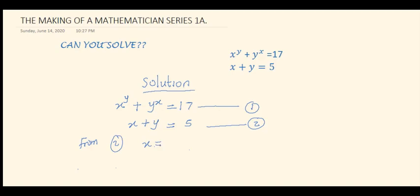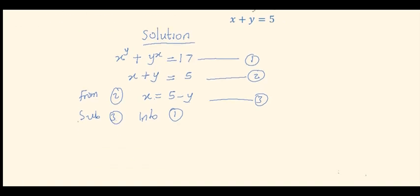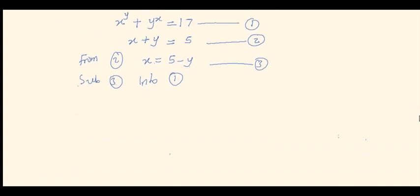From equation 2, make x the subject of formula: x equals 5 minus y — call that equation 3. Substitute equation 3 into equation 1. We have equation 1 as x raised to power y plus y raised to power x equals 17, so replacing anywhere you see x, put 5 minus y: we get 5 minus y raised to power y plus y raised to power 5 minus y equals 17.